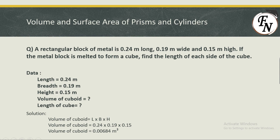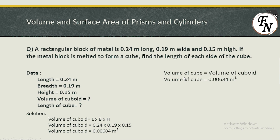We need to make a single cube out of this block, so the volume of the cuboid equals the volume of that one cube. The cuboid has different dimensions, but the cube will have all equal sides. So volume of cuboid = volume of cube = 0.00684 m³.